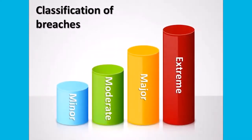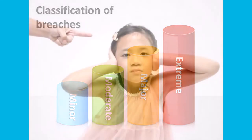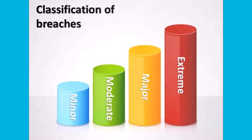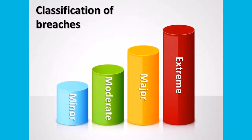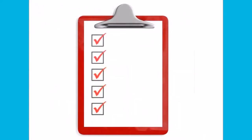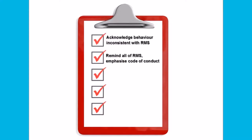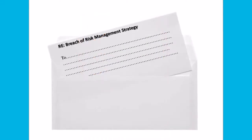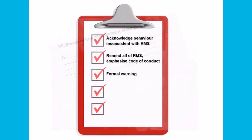For example, it might be reported that a volunteer has been overheard swearing at a child on one occasion. You may have pre-classified swearing as a moderate breach. The corresponding consequences may include acknowledging the behavior is not consistent with the code of conduct, reminding all people in your organization of the risk management strategy and code of conduct, providing clarification where necessary, issuing a formal warning to the volunteer, and providing further training for staff and volunteers on positive ways of working with children.